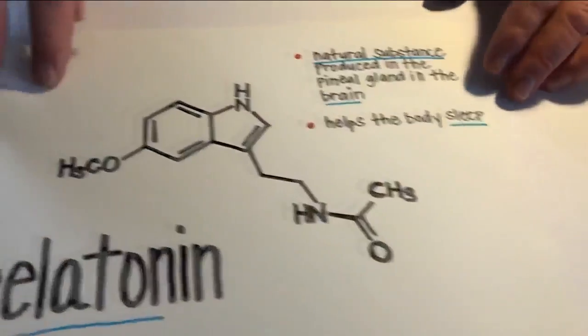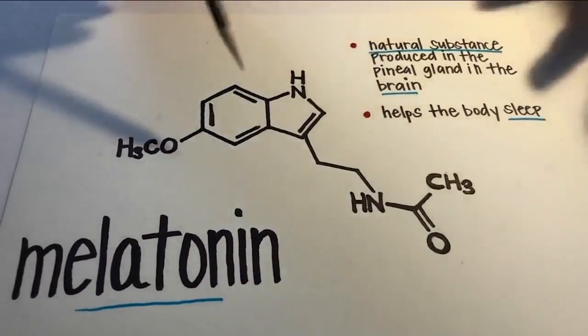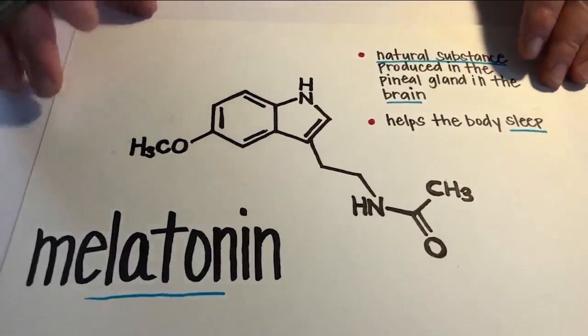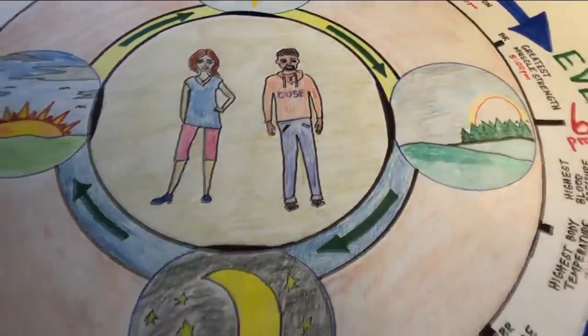Melatonin, quite simply, is a natural substance produced in the pineal gland in the brain that helps the body sleep. So when you are looking at light, you're not going to be getting melatonin, so that means you will not be sleeping. Now let's check out the circadian rhythm.